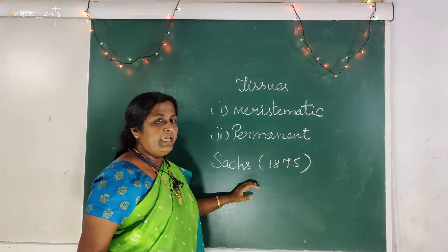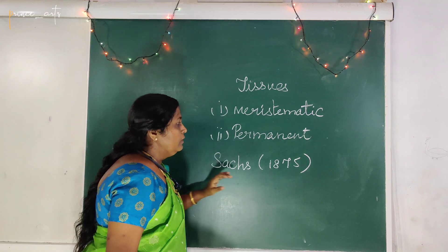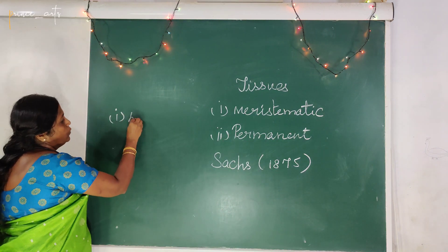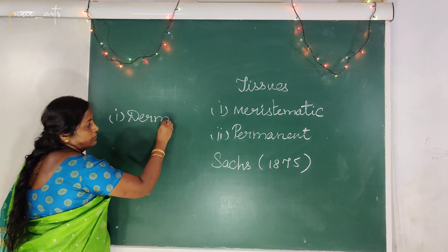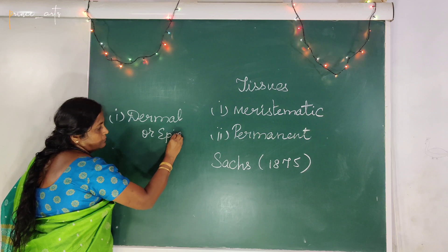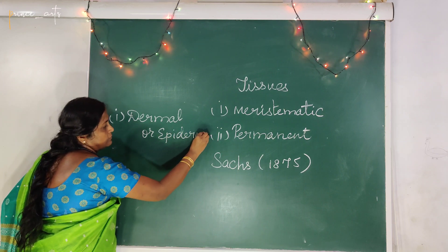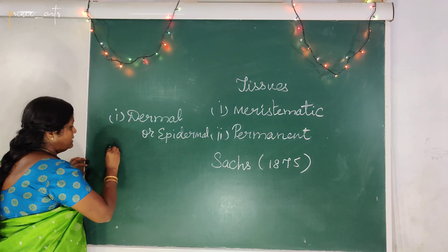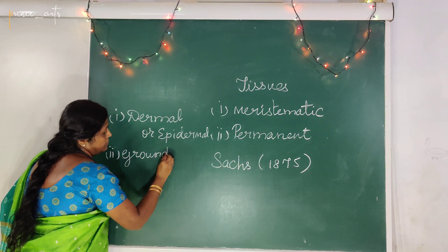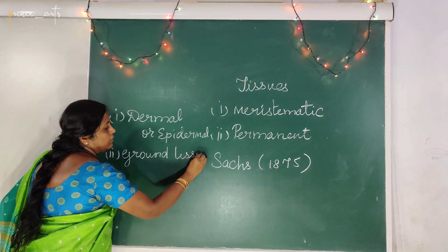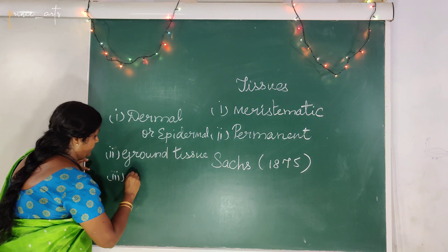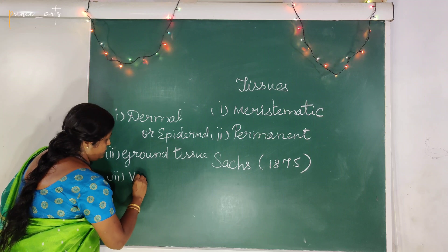Sachs broadly classified the tissue system into three types: the first one is dermal or epidermal tissue, the second one is ground tissue, and the third one is vascular tissue.